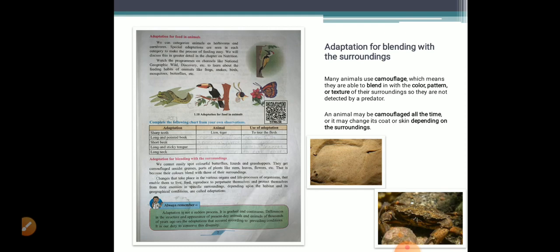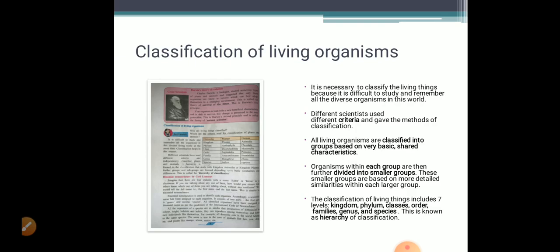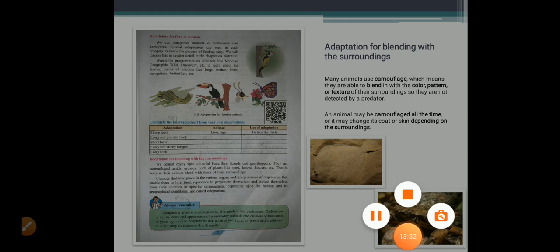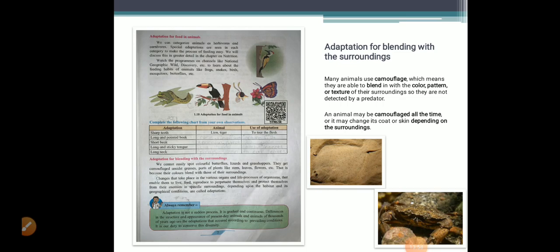Changes that take place in the various organs and life processes of organisms that enable them to live, feed, reproduce, to perpetuate themselves and to protect themselves from their enemies in specific surroundings depending upon the habitat and its geographical conditions are called adaptations. We have seen the definition of adaptation. It is not a sudden process. It is gradual and continuous. Differences in structure and appearance of the present day animals and animals of thousands of years ago are adaptations that occur according to prevailing conditions. It is our duty to conserve this diversity.